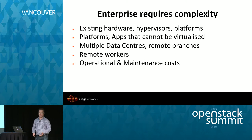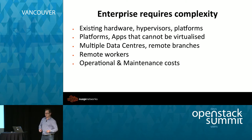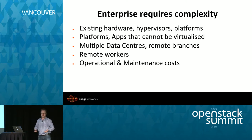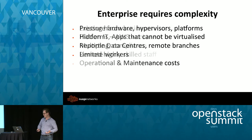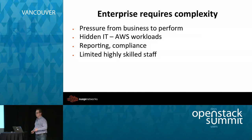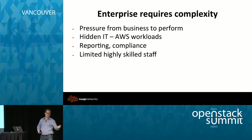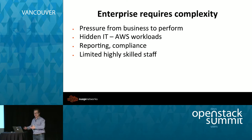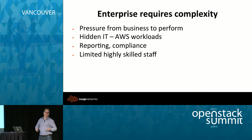The enterprise is complex. There's existing hardware, hypervisors, platforms, apps that can't be virtualised, as well as platforms such as mid-range systems, multiple data centres, remote branches, remote workers — it's a very complex environment. There's also pressure from the business to perform, hidden IT, Amazon workloads being pushed out by people in marketing and other areas of the business without central IT knowing what's going on — add to that reporting compliance and a limited set of highly skilled staff to implement all this.